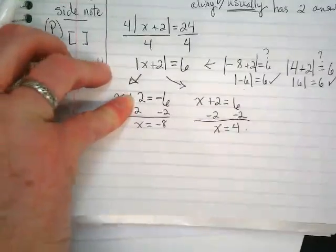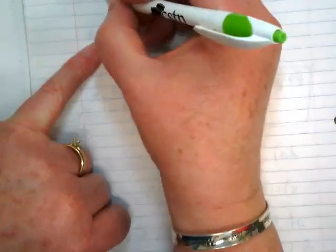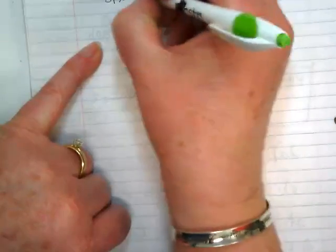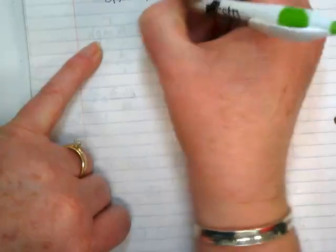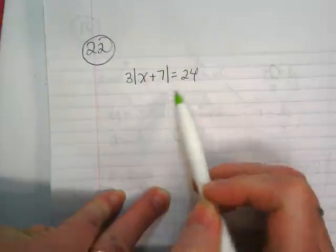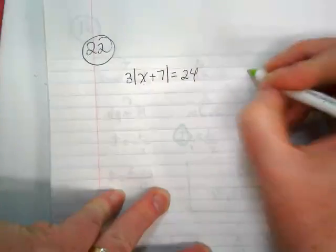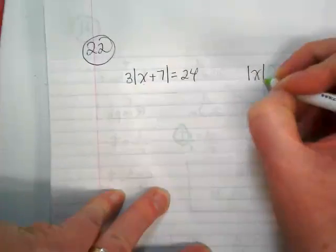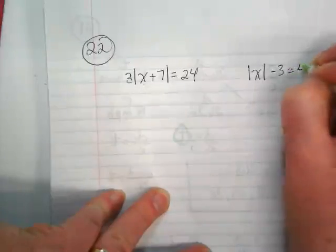I'm going to give you two problems I want you to try on page 22, and we will come back in a moment and check them. Okay. What if you have... Oh, thank you. We have the absolute value of x plus seven multiplied by three, equal to 24, and then we also have the absolute value of x minus three equals four.